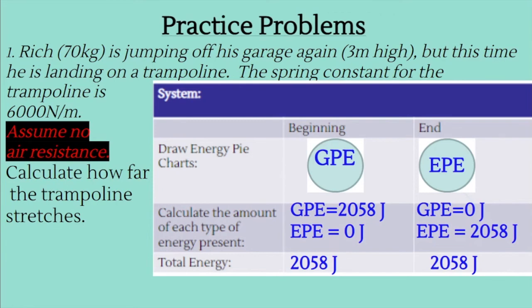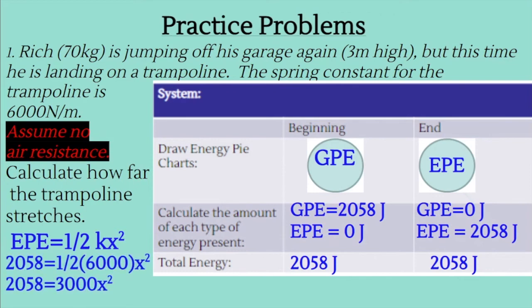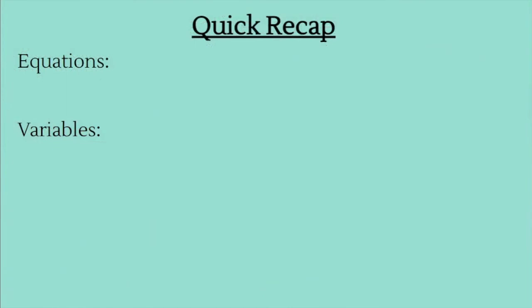To calculate how far the trampoline stretches, we plug our EPE into the equation: EPE equals one-half kx squared. So 2,058 equals one-half times 6,000 times x squared. Simplifying and solving for x, then taking the square root, we find that x equals 0.83 meters — meaning the springs stretch 0.83 meters.